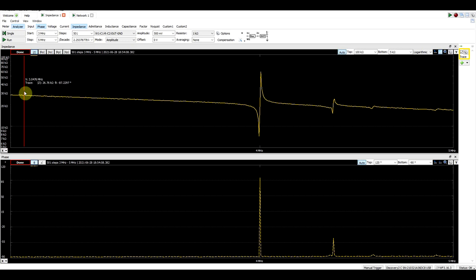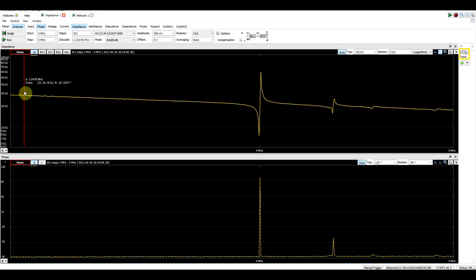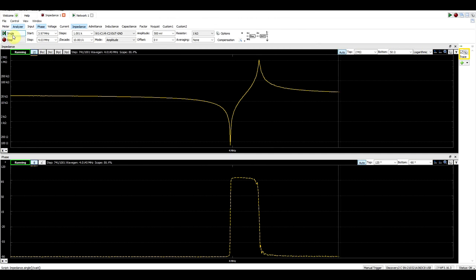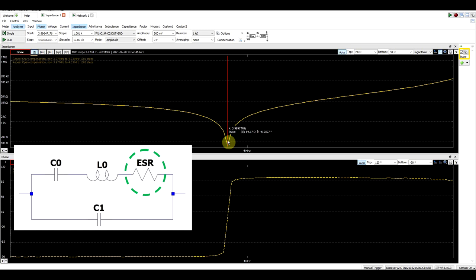Now another thing that we can get from this measurement is the ESR, so our series resistance. But to get this measurement done accurately, we need a very detailed measurement around our resonance points. So on this measurement running from 3.97 megahertz up to 4.03, we can check the minimal impedance value. So this is about 68 ohms. So this is the frequency at which the capacitive and the inductive series elements cancel out, so we only see the ESR.